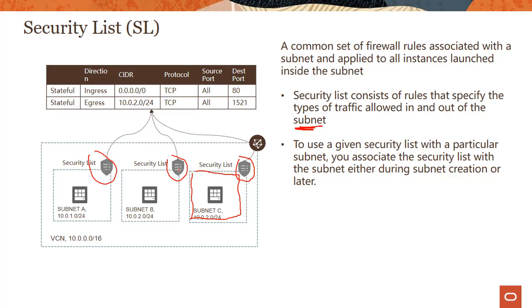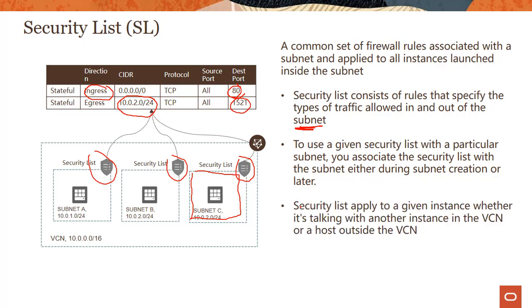The second thing is, if you see the rules themselves, all three security lists have the same rule — though they can be different rules. It basically says ingress, meaning incoming traffic: I'm allowing all traffic on port 80. And egress, meaning outgoing traffic: I'm only allowing traffic to this particular subnet for port 1521. This is a sample entry and your situation would be different depending on your requirements. To use a security list with a particular subnet, you associate the security list with the subnet either during the creation process or later.